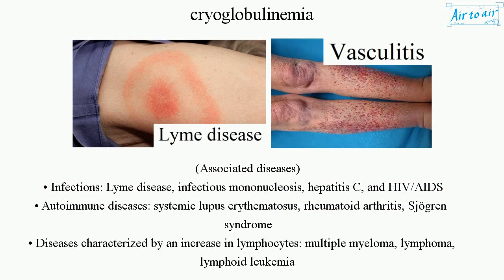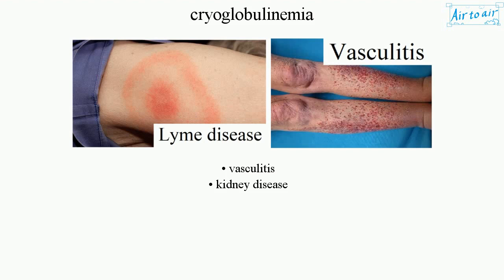Associated diseases include infections such as Lyme disease, infectious mononucleosis, hepatitis C, and HIV/AIDS; autoimmune diseases such as systemic lupus erythematosus, rheumatoid arthritis, and Sjögren's syndrome; diseases characterized by an increase in lymphocytes such as multiple myeloma, lymphoma, lymphoid leukemia; and also vasculitis and kidney disease.